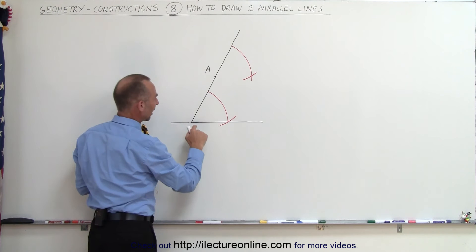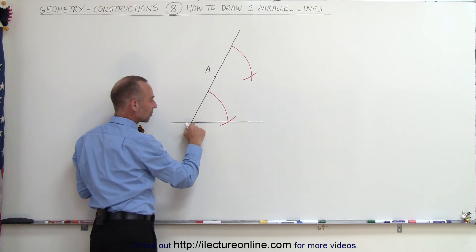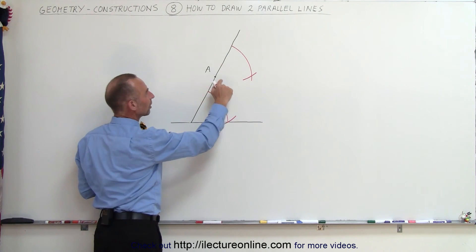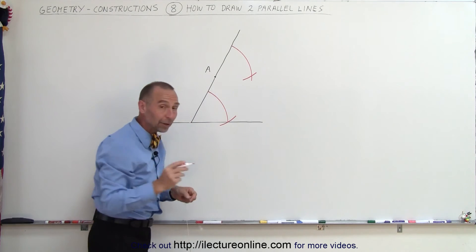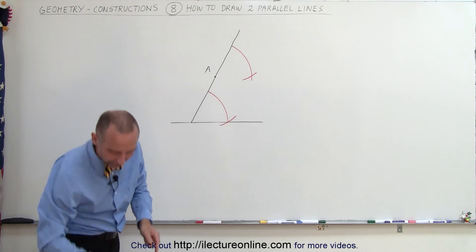And so now what we can assume is that the line from here to there must be parallel to the line from there to there. And now we can go ahead and connect those two points and draw our second line.